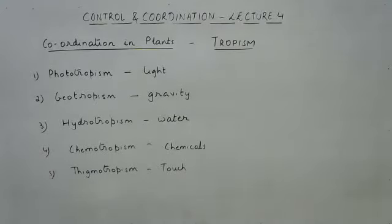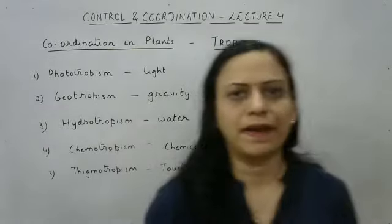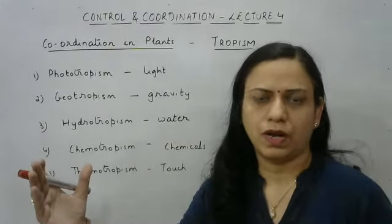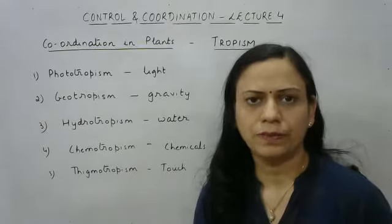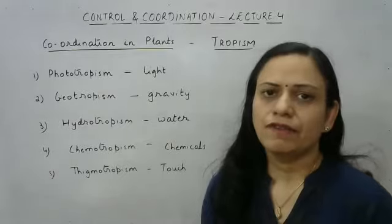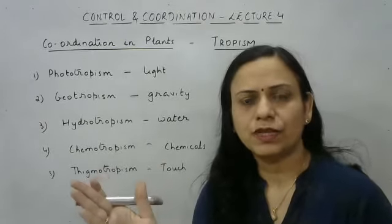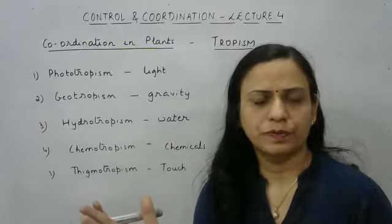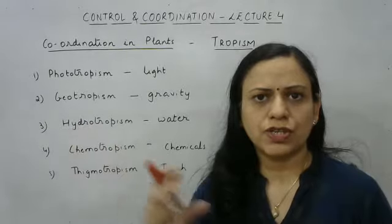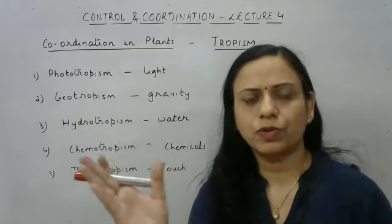Now we are going to study some activities that can help us identify all these tropic movements. First, we are going to talk about phototropism. We place a plant in a dark room with a window on just one wall — a small little window — and we keep that plant in that room for a few days. We will observe that the plant bends towards the window. So the light is acting as a stimulus, causing the plant to bend towards it.